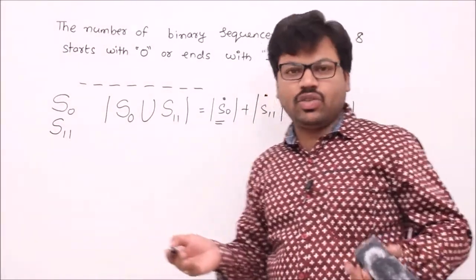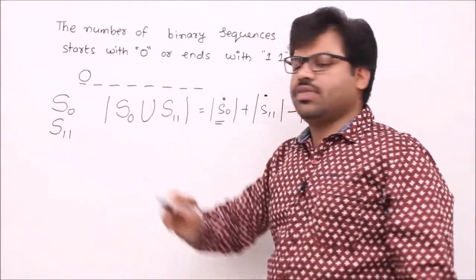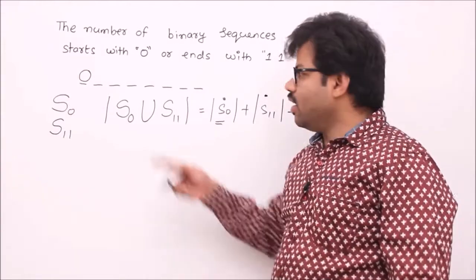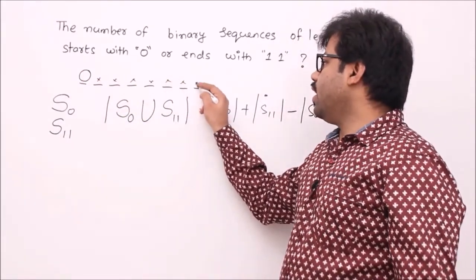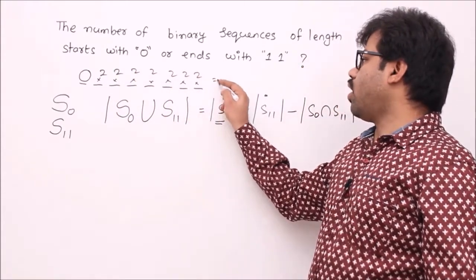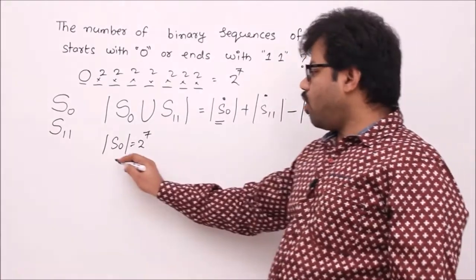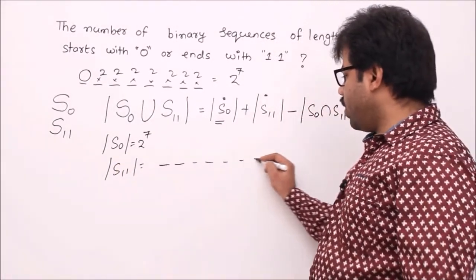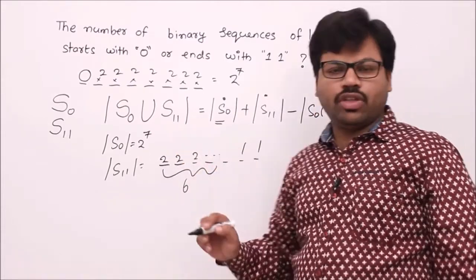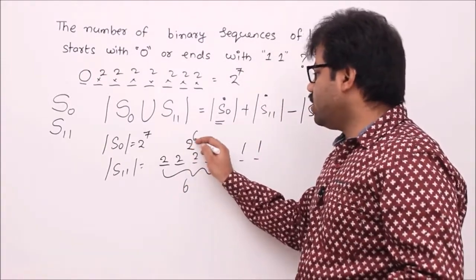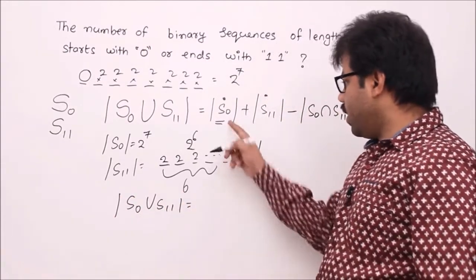Now let's compute each value. For |S0|: sequences of length 8 starting with 0 — fix the first position as 0, leaving 7 free positions each with 2 choices, so |S0| = 2^7. For |S11|: sequences ending with 11 — fix the last two positions, leaving 6 free positions, so |S11| = 2^6.